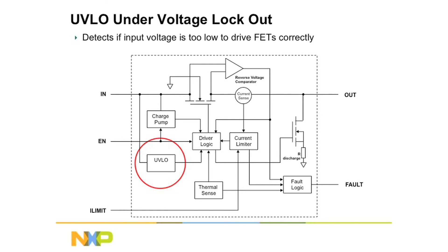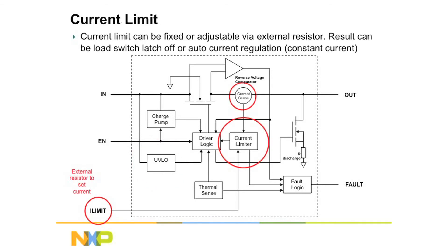UVLO, or under voltage lockout — at very low voltages, load switches and FETs don't operate exactly as planned. By putting a UVLO circuit on board, the device can be made to shut down very reliably and securely if the voltage goes too low. Additionally, suppose you try to plug too big of an appliance into the USB port on the side of your laptop — if it draws too much current, it could damage the laptop. A load switch with a current limit would automatically disconnect, sort of like a circuit breaker or a fuse, if too large a device is plugged in.